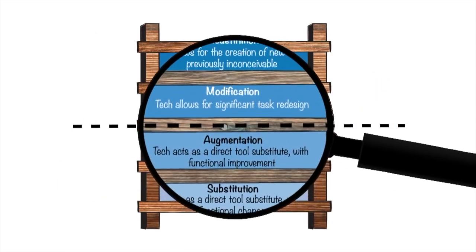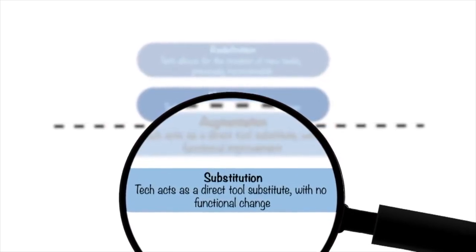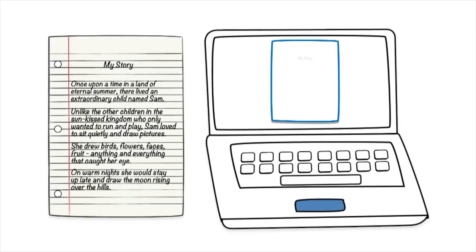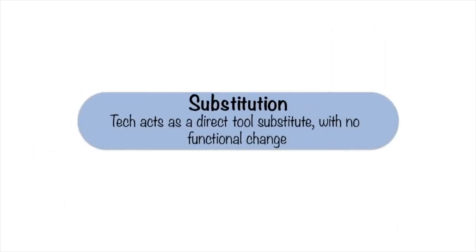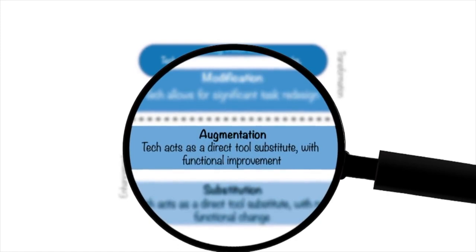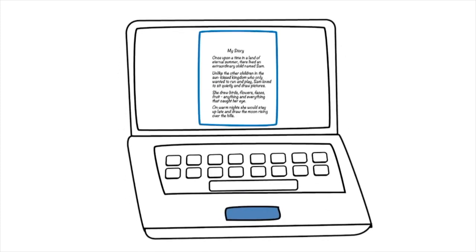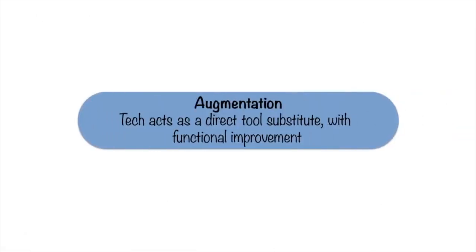Let's take a look at an example of a classroom task and how it evolves through the lens of SAMR. In substitution, technology acts as a direct tool substitute with no real functional change to the task. For example, take creative writing: what if you had students write a story using a word processing program? Students are substituting a handwritten story for a typed story—the task is the same with no real change in student engagement. In augmentation, technology still substitutes but with some functional improvement. Students could use features such as spell check and tools for formatting—the technology augments it with enhanced productivity.